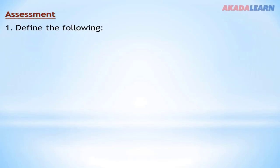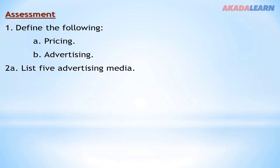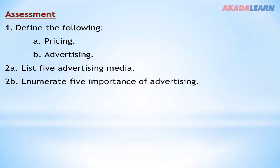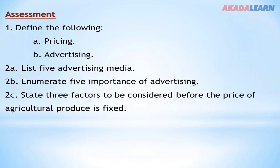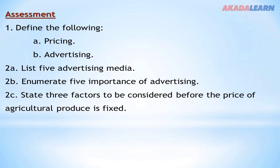Now let's have our assessment. Question one: define pricing and advertisement. Question two: list five advertising media and enumerate five importance of advertising. Question three: choose three factors to be considered before the price of agricultural produce is fixed. If you find you cannot answer these questions, go over the video again. Thank you for being on this platform today. Have a great day.